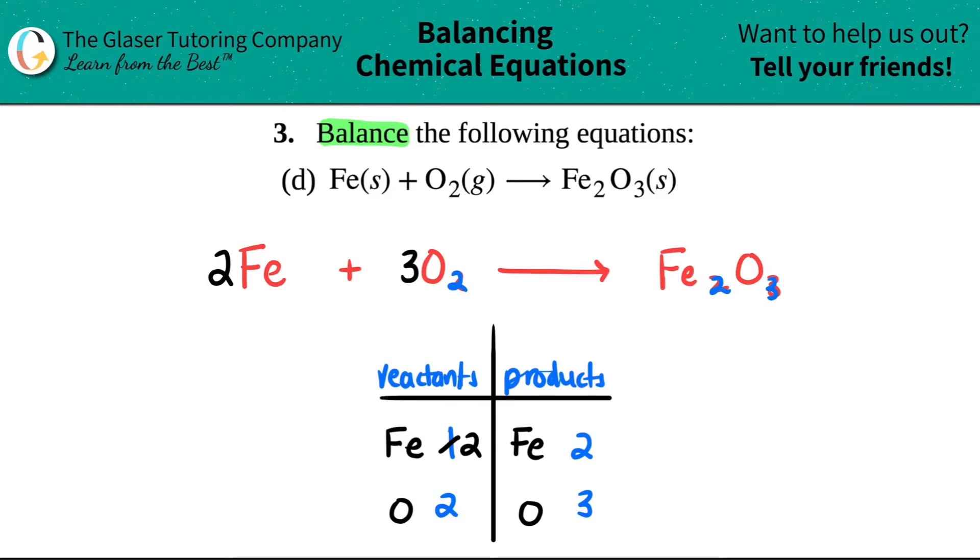So if I do that, three times two is six. And now if this is a three, I have to put a two in front because three times two is a six. But you have to be fair. If I put a big coefficient in front of a whole compound, I have to distribute that number by multiplication through everybody.